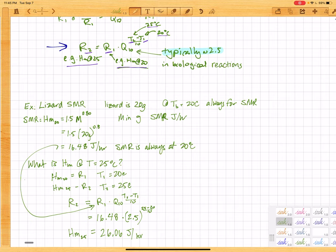So that's how we can calculate the metabolic rate at a different temperature, either higher or lower. You just have to match the temperatures to the metabolic rates.